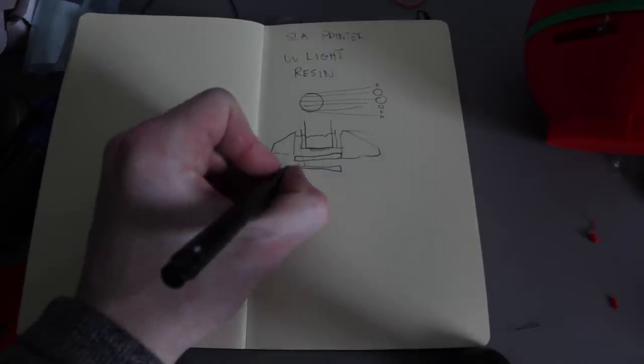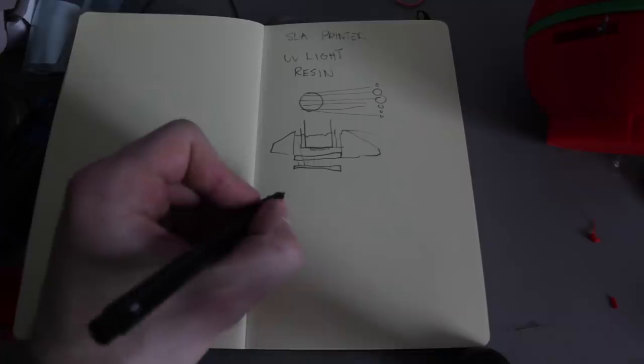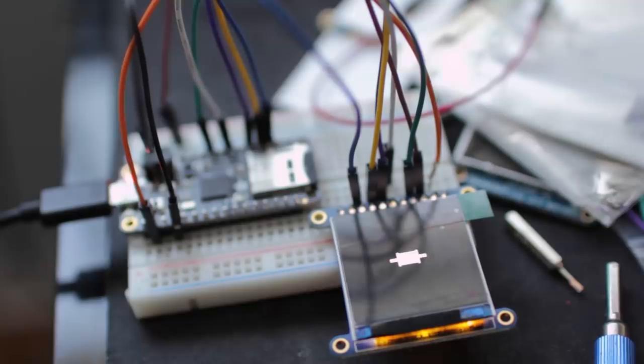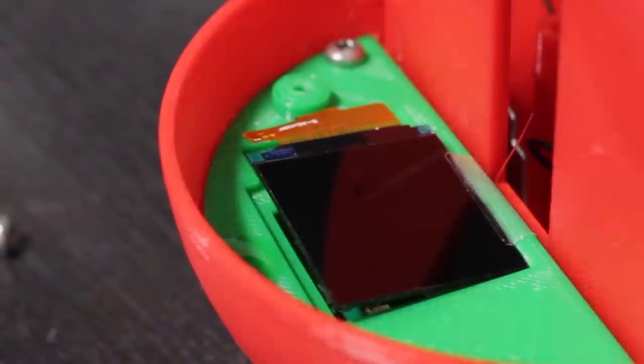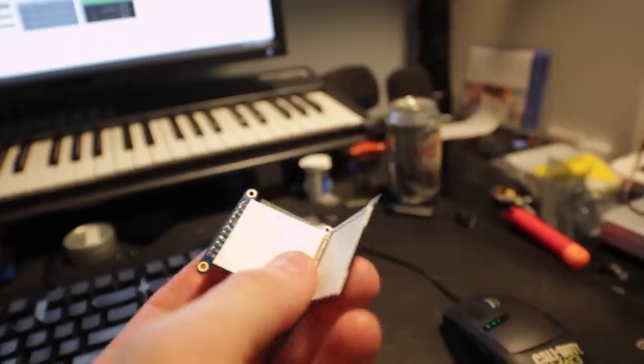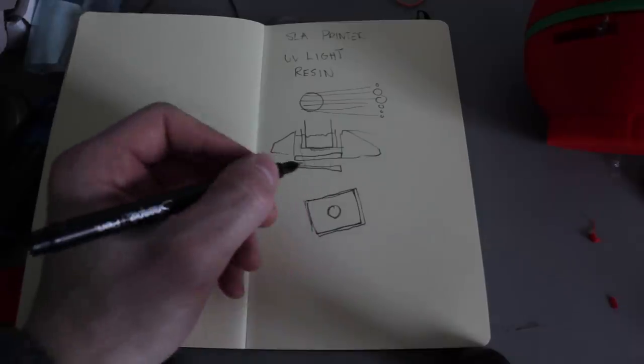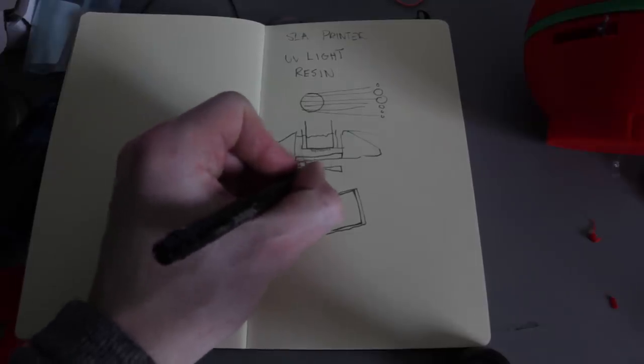So the way this works is you take the object, you split it into several different images, and then it gets displayed on the LCD screen. And wherever there is white, there is UV light because we're going to remove the back panel of the LCD that has the stock LEDs on it, and we're going to replace them with our own UV LEDs.